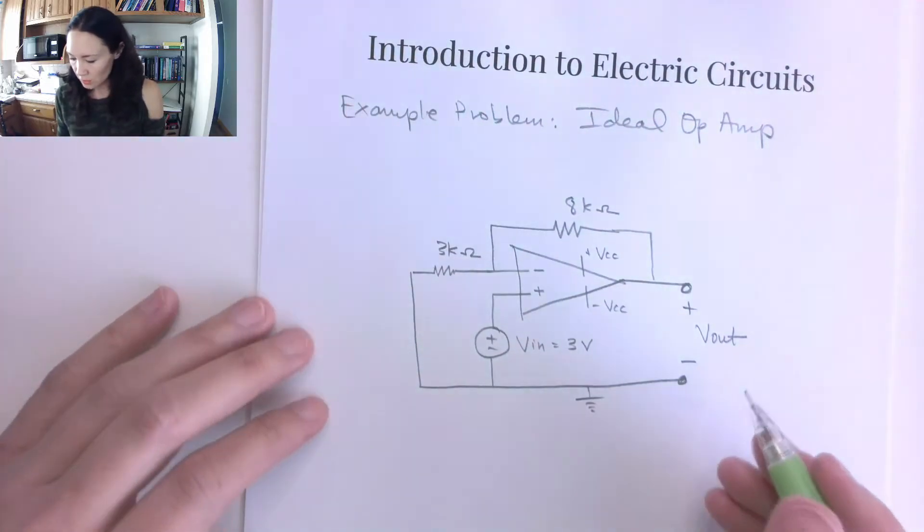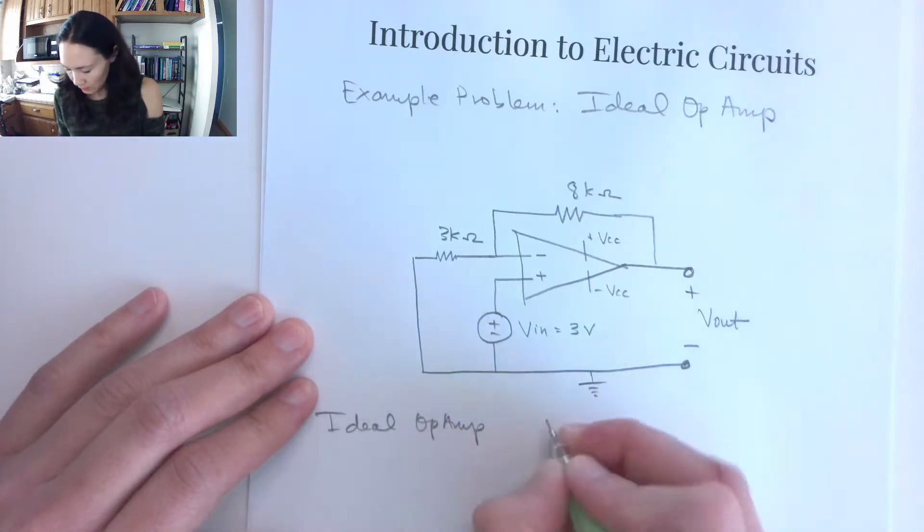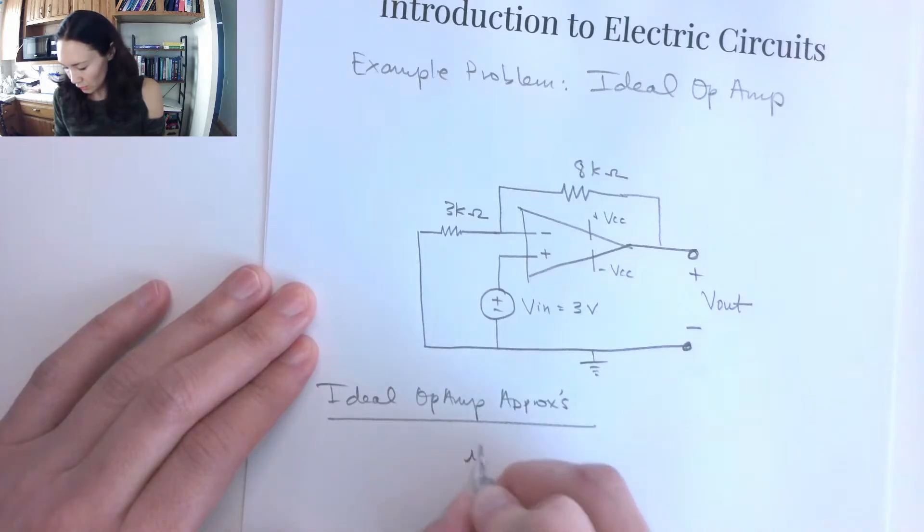So the new approximations that we just learned, the ideal op-amp approximations, are that the current coming in to one input is equal to the current coming in to the other input, and they're both equal to zero.